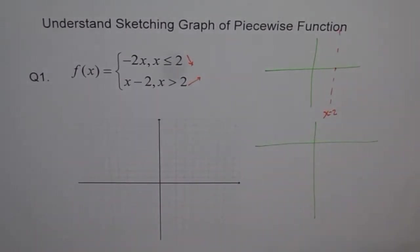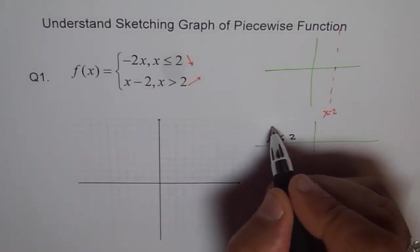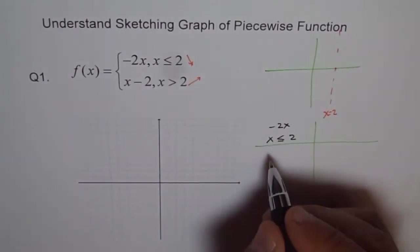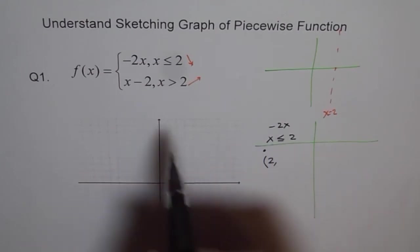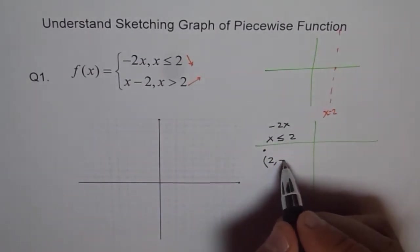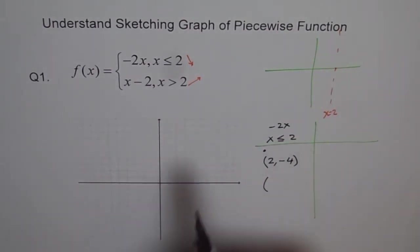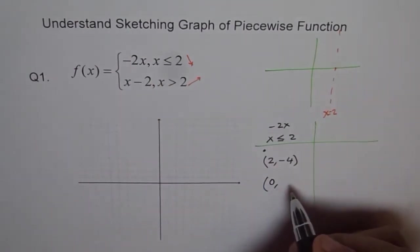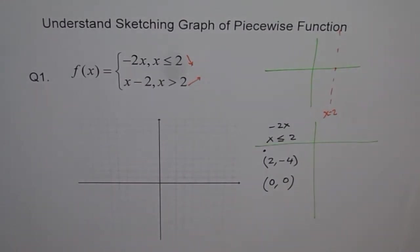So we will make a table of values and say, well, if x is less than or equal to 2, then my function is -2x. Let me take 2 values. 2 is included, so we say filled in, right? Filled in. So it is not a hole, it is just filled in. And the point is at x equals 2, what is the value of the function? -2 times 2 will give me -4. Let us take one more value, which is less than 2. 0 is a good point. So at 0, the value is 0. That is it. So these two points will give me one side of the graph. So let us plot that side of the graph.